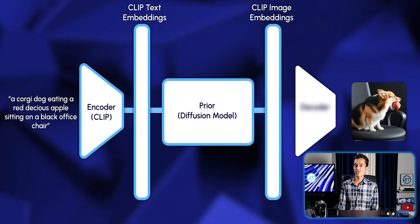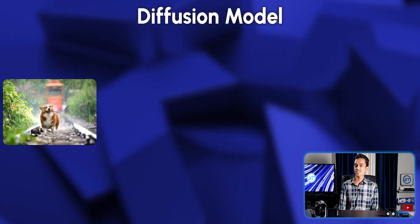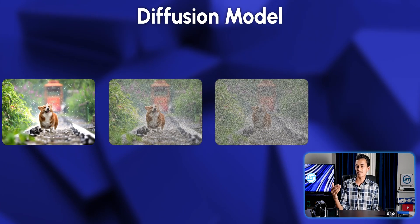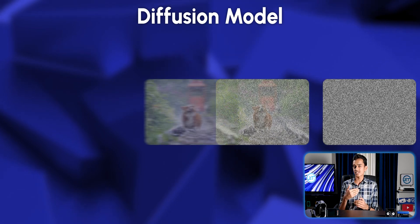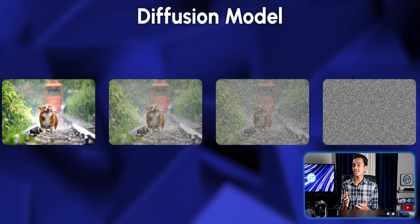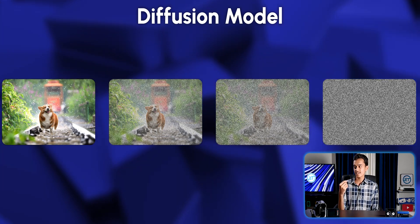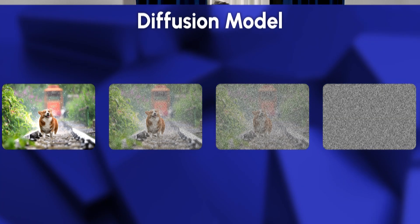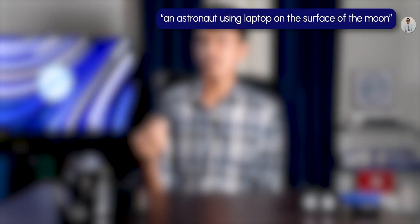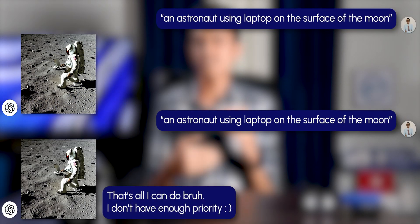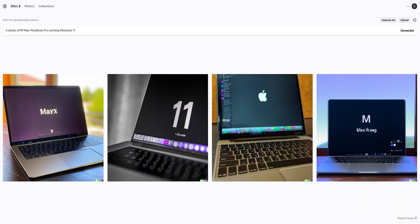DALL-E uses another model called a diffusion model as the prior. This is a step-by-step process of adding gradual noise to the image until it becomes unrecognizable from the original, and then it tries to recreate the original image back from that full noise. This way it learns the individual details of the image embeddings and gains the ability to generate images from a text prompt. Based on an experiment by the authors of DALL-E, using the prior resulted in better images, and removing it would eliminate the ability to generate variations — the model would just repeat the same image results for a given prompt. This is why DALL-E can produce up to four unique images for a single prompt.